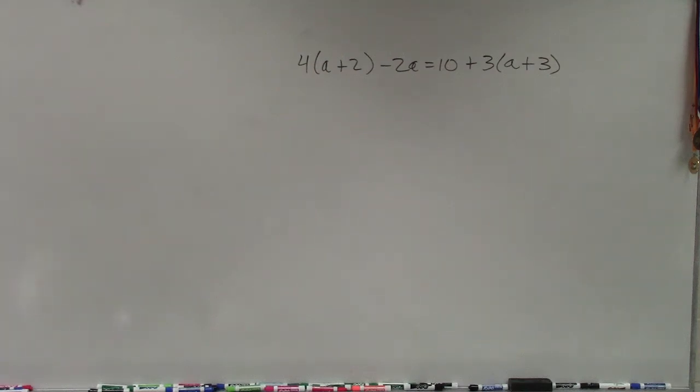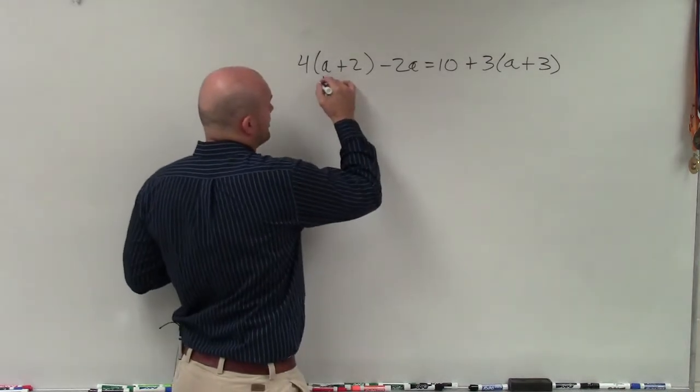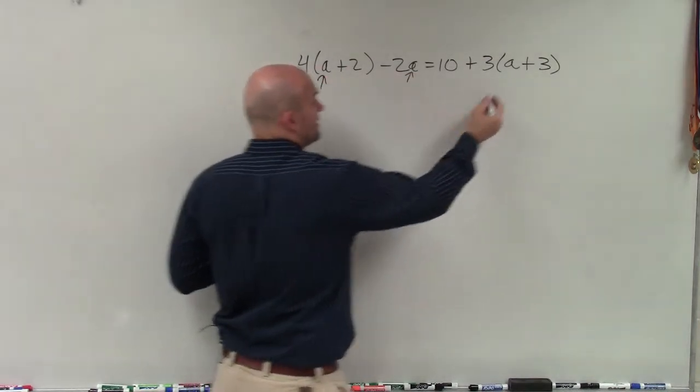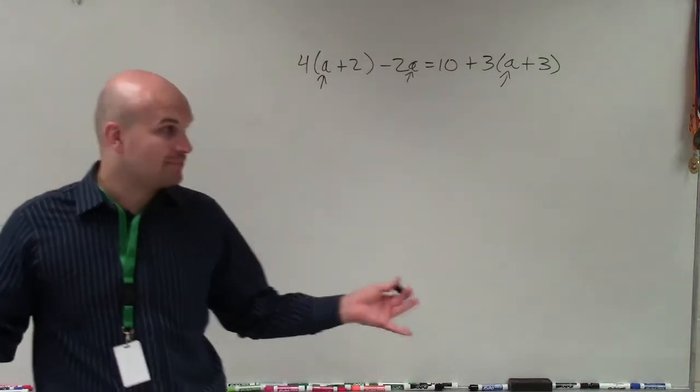So on this problem, it's a multi-step. You can see that we have a variable—well, we have two on the same side, as well as a variable on both sides, right? So this occurs for a multi-step problem.